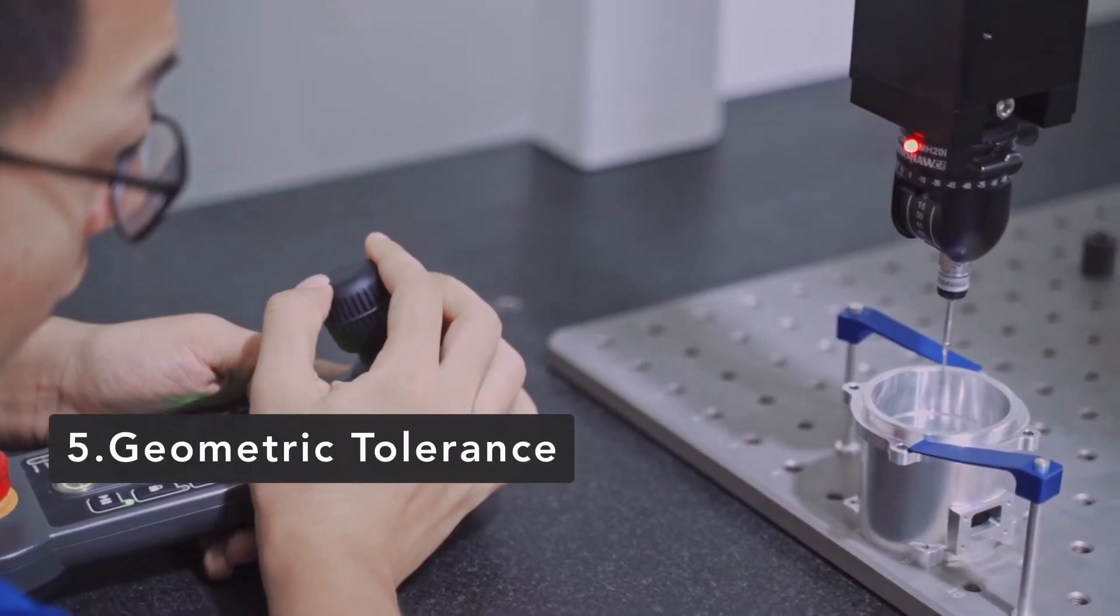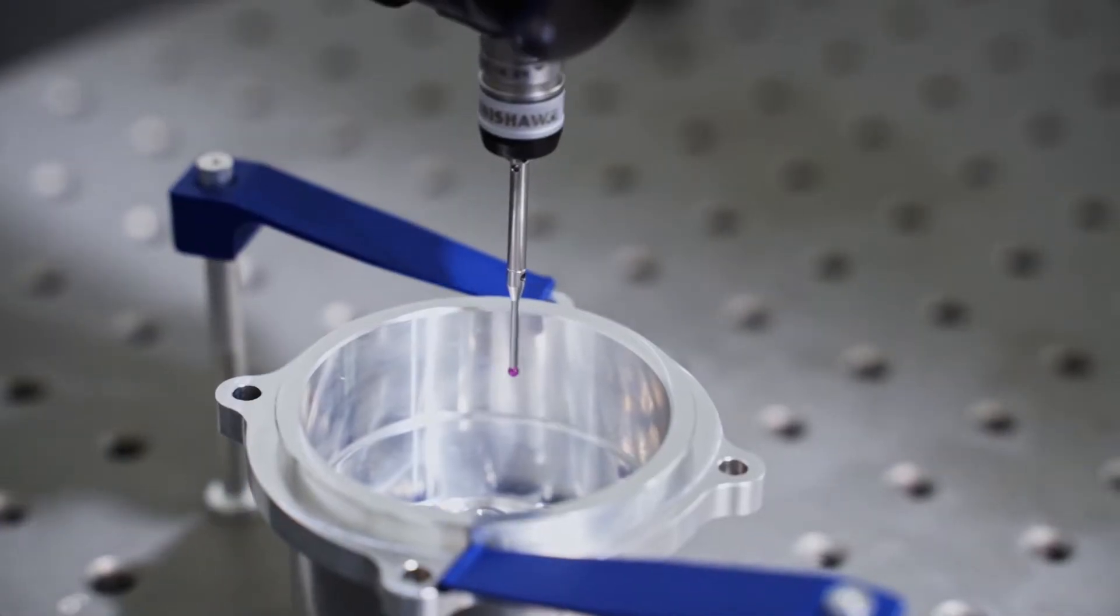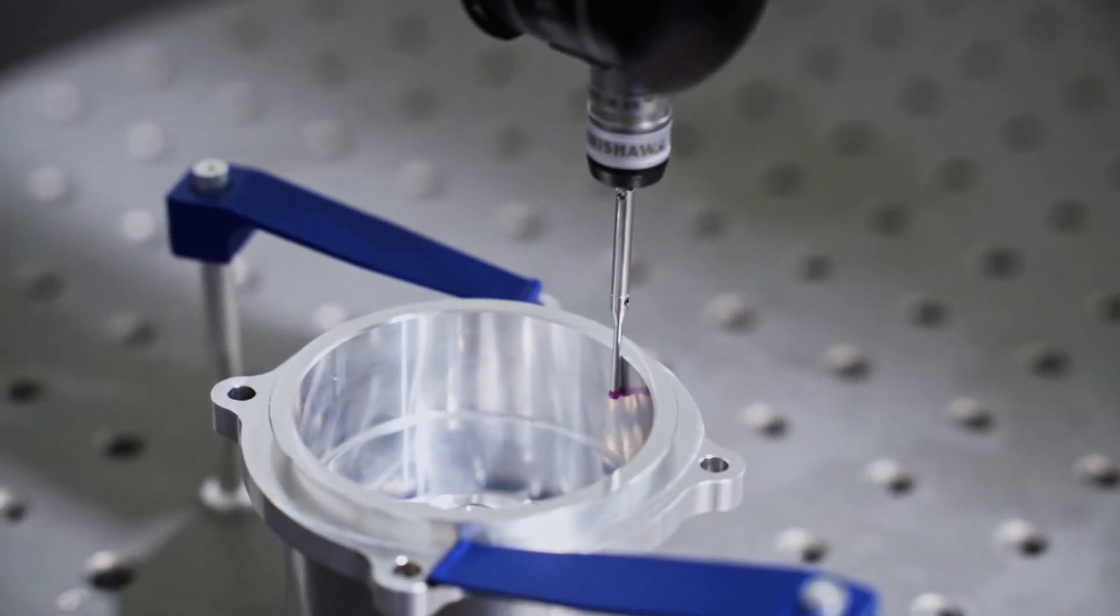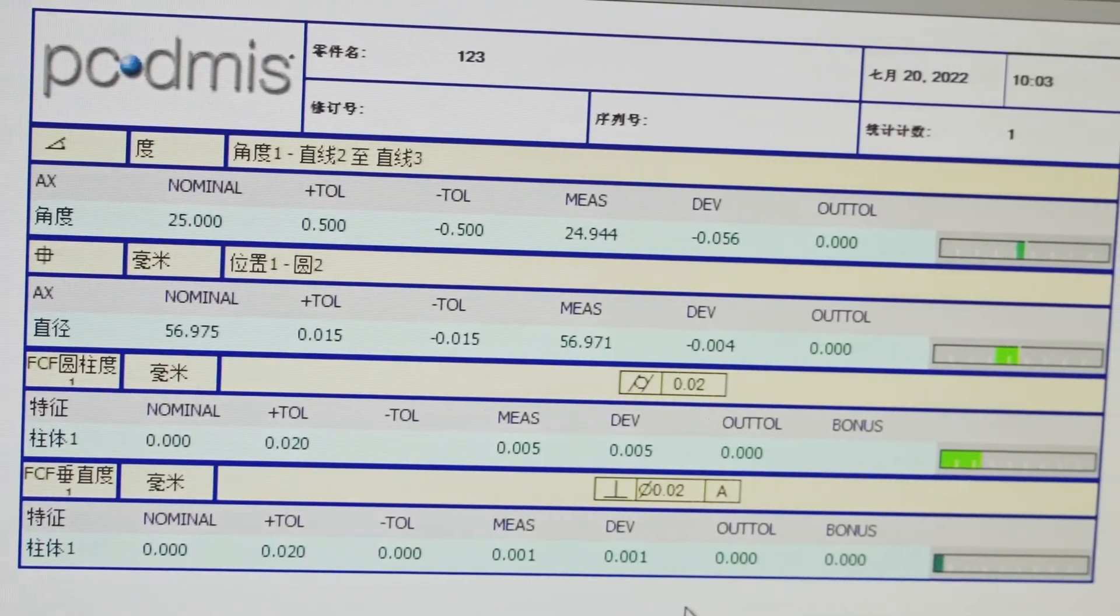Now number 5, this is the most useful equipment which is called CMM. We use this to inspect the perpendicularity and cylindricity and angle. Now we've got the final inspection report.